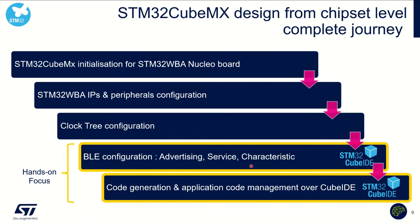Starting at chipset level means understanding the complete journey. I need first to initialize the hardware, the peripherals, and the clock tree. At the end, I will be able to focus on the application itself: configuration of the BLE, advertising, services, characteristics, and then being able to generate the code and build.